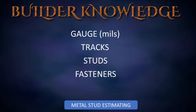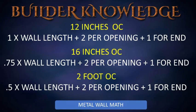For studs, determine stud length from the prints, usually sectional views. Use the appropriate formula for determining stud quantity: 12 inches on center equals 1.0 times wall length, plus 2 for each opening, plus 1 for the end; 16 inches on center equals 0.75 times wall length, plus 2 for each opening, plus 1 for the end; 24 inches on center equals 0.5 times wall length, plus 2 for each opening, plus 1 for the end.